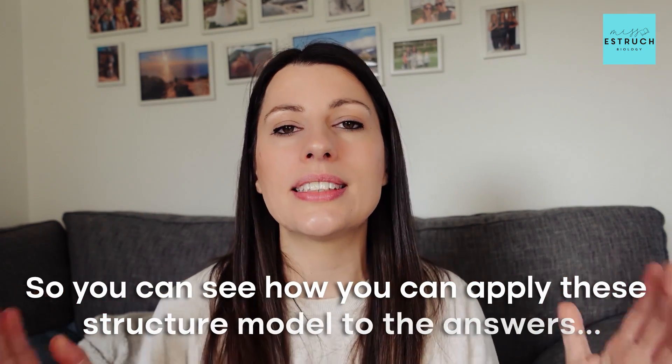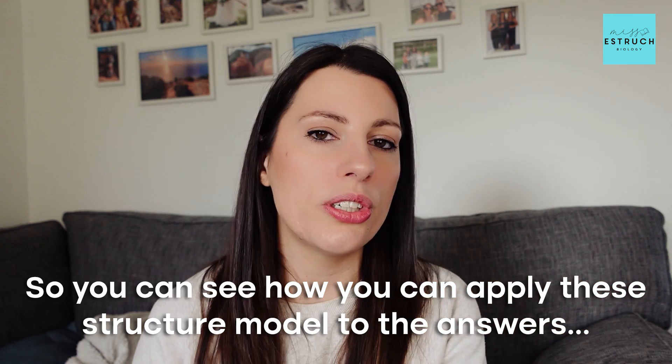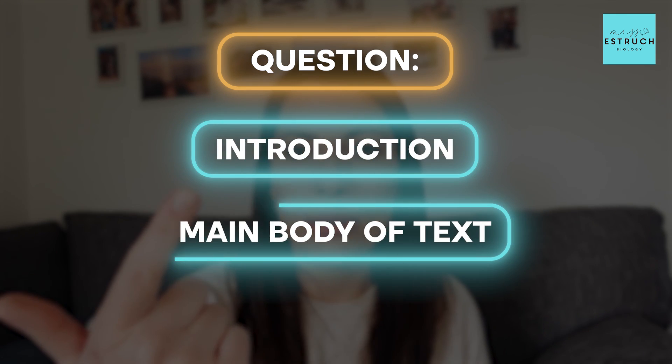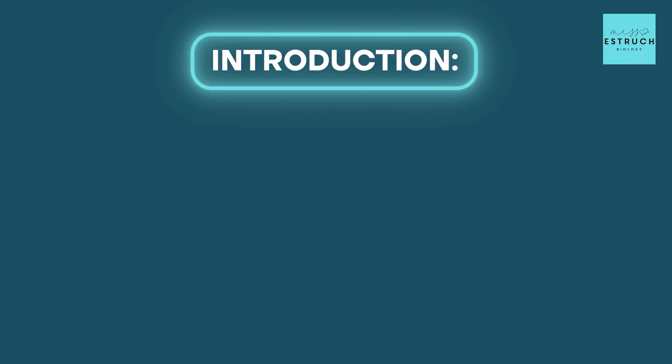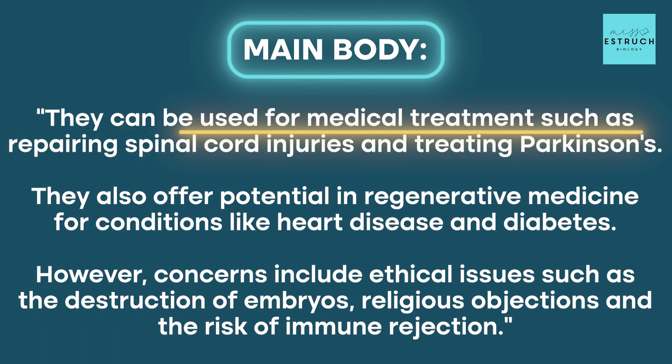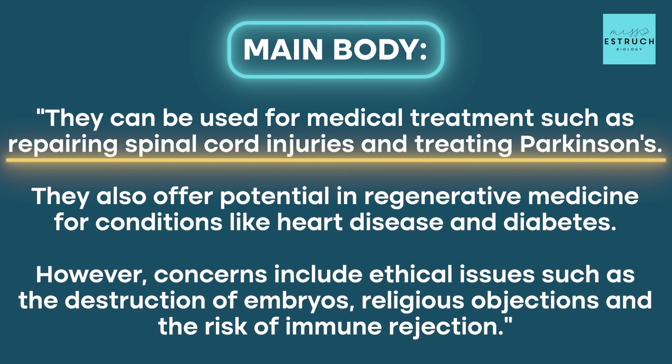Going back to the stem cells question, let's apply this structure to that exact answer. The introduction would be: 'Embryonic stem cells are pluripotent, meaning they can differentiate into any cell type.' That starts with our knowledge of embryonic stem cells and a key definition. Then we move on to the main body — about four to five sentences. For this question: 'They can be used for medical treatments such as repairing spinal cord injuries and treating Parkinson's. They also offer potential in regenerative medicine for conditions like heart disease and diabetes.'